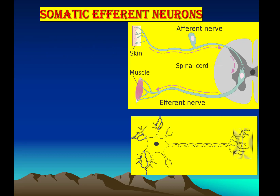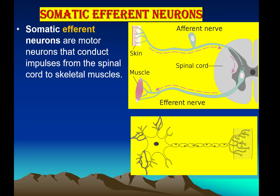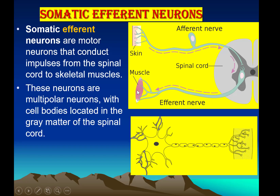Somatic efferent neurons are motor neurons that conduct impulses from the spinal cord to the skeletal muscle. You can see that this is a motor neuron — they bring information from the spinal cord to the skeletal muscle. These neurons are multipolar neurons, with cell bodies located in the gray matter of the spinal cord.